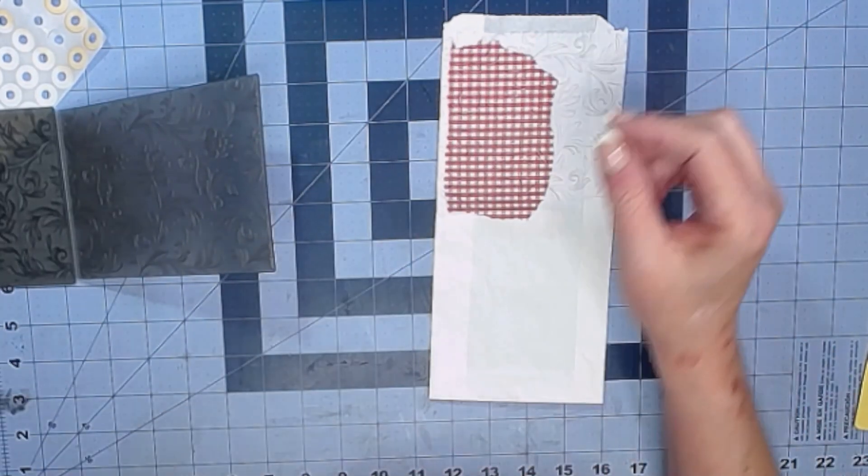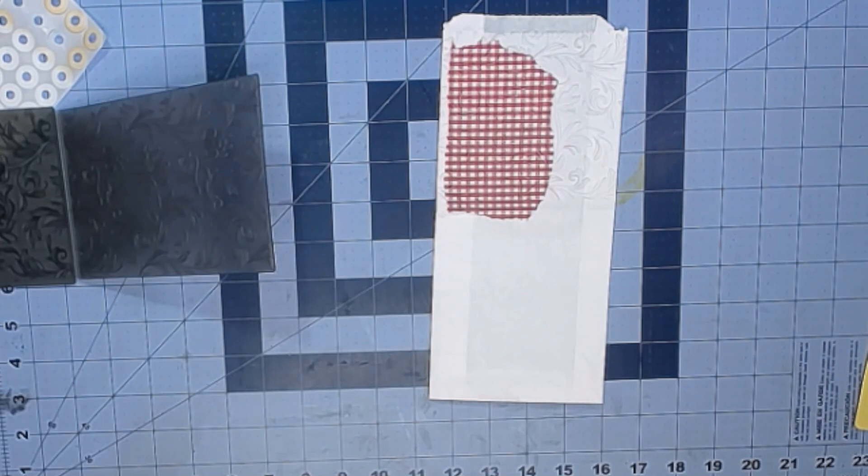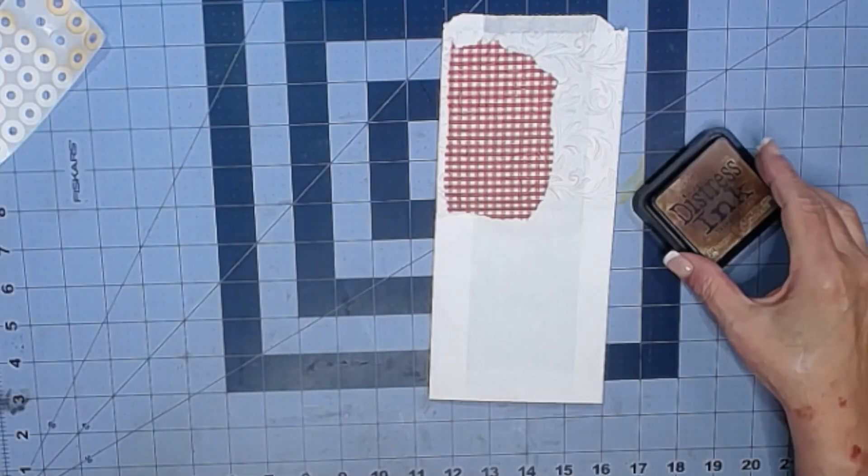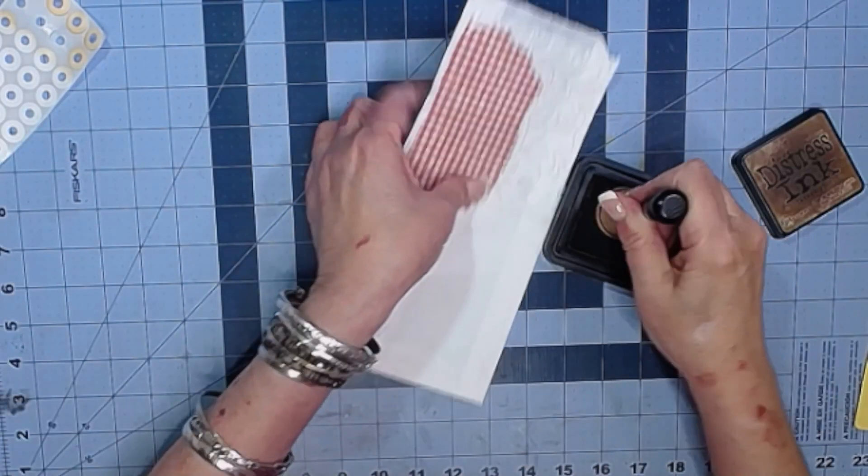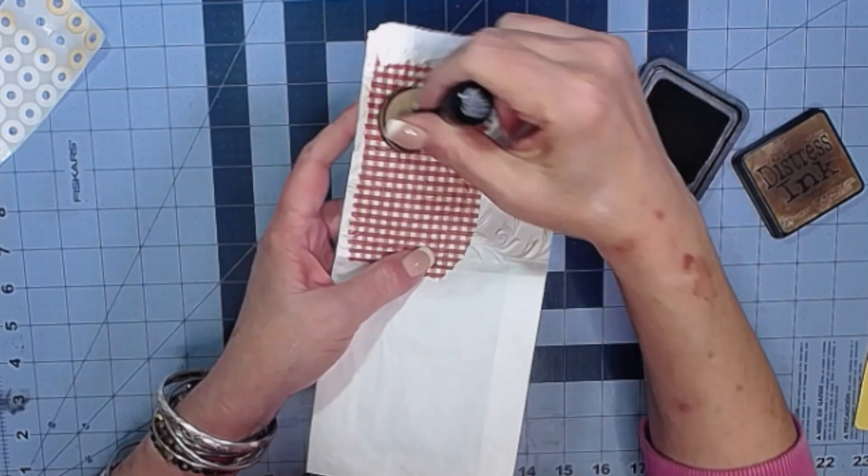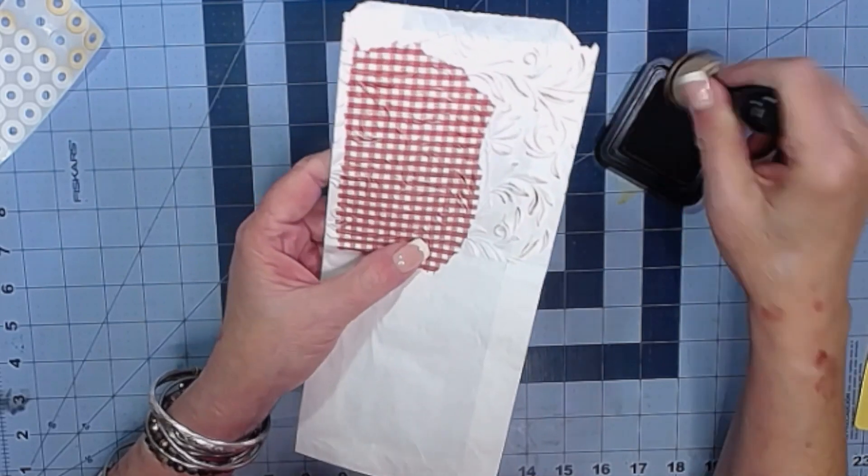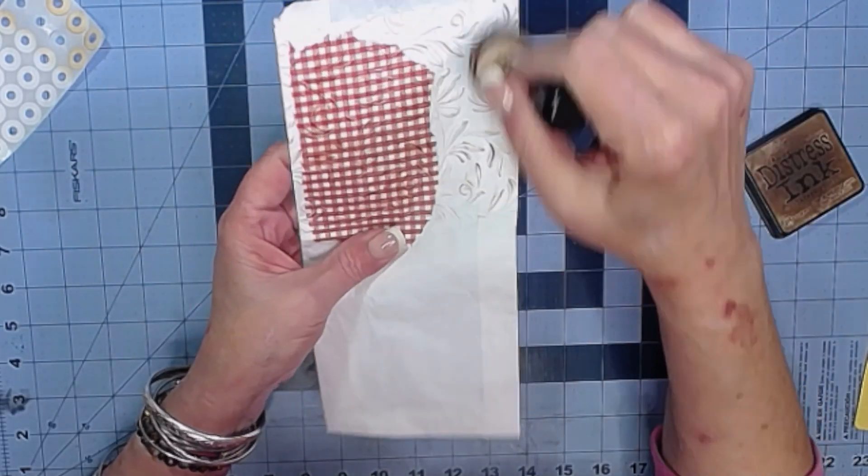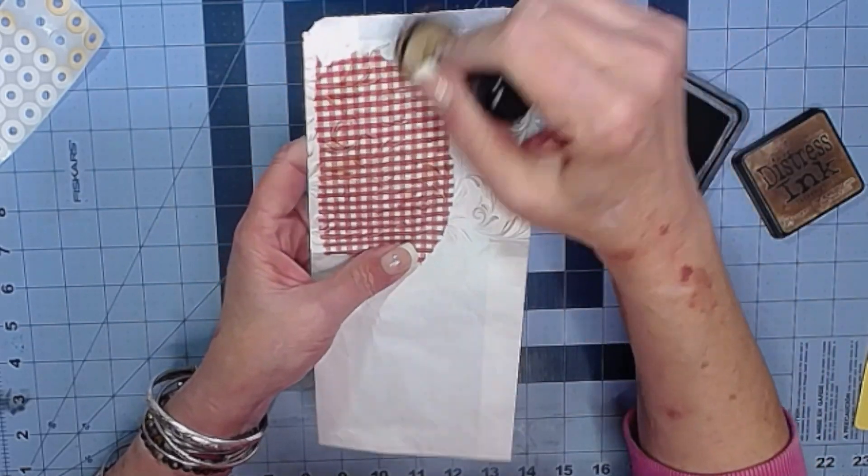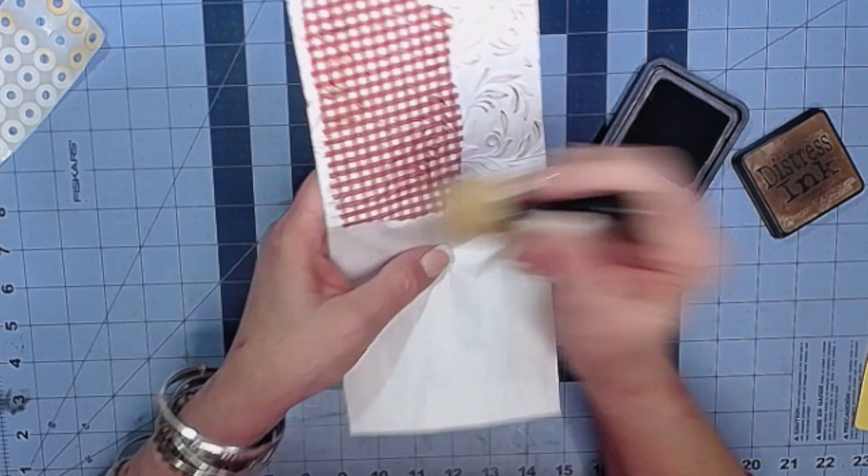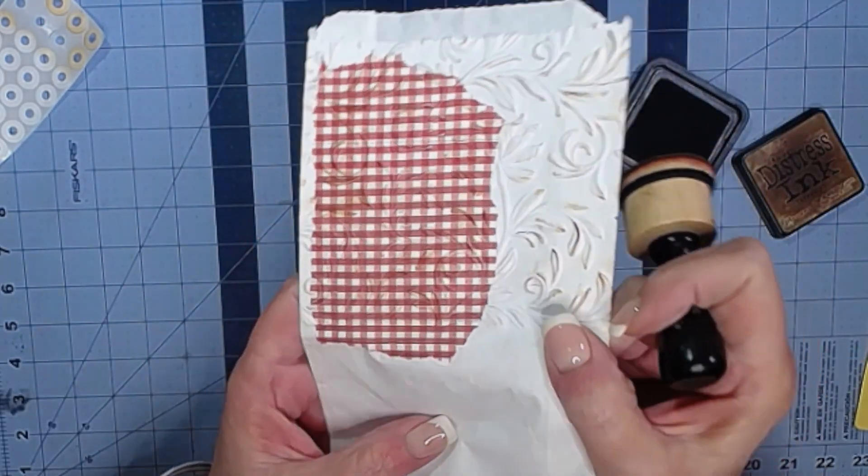And we don't need the bottom part embossed because that's going to be folded up to make our pocket. So what I did after that was I used my vintage photo ink. And I just really lightly brushed over it to pick up some of that embossing to make it more obvious. Not doing it very hard. Just a little bit. And that just helps it stand out some.